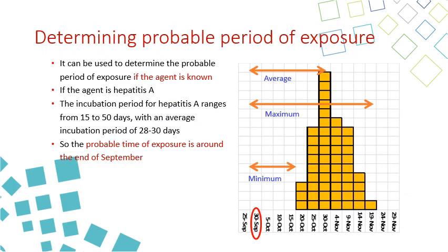Here we have a common source outbreak caused by hepatitis A. You go to the literature and find that the incubation period of hepatitis A ranges between 15 and 50 days, with an average of 4 weeks. Using the start of the outbreak as the minimum, the end as the maximum, and the peak as the average, you trace back 15 days, 50 days, and 4 weeks respectively. Where these three intervals converge is the probable period of exposure.